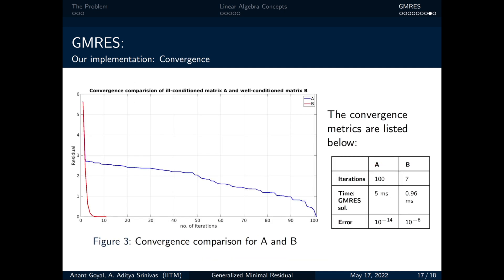Now, if we look for the convergence of GMRES on A and B, we can clearly see that A took around 100 iterations to converge with an error of order 10⁻¹⁴ in about 5 milliseconds and B took around 7 iterations with an error of 10⁻⁶ in about 0.96 milliseconds.